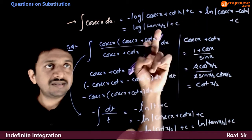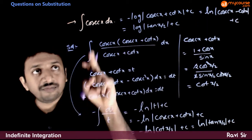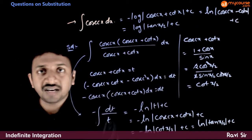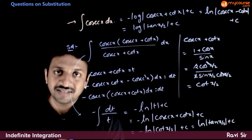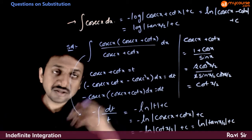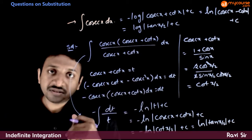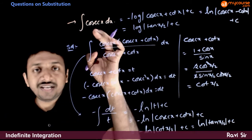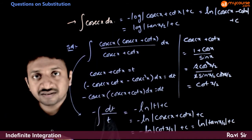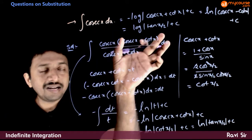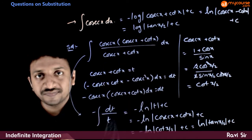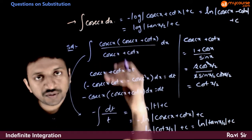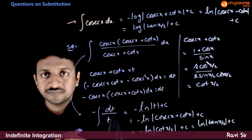So all three of these are valid formulas for the integration of cosecant x dx. In a similar fashion, we can also integrate secant x — you just need to multiply and divide by (secant x plus tan x), and that gives you the same process.